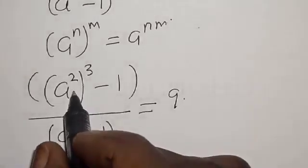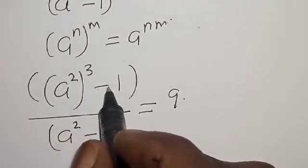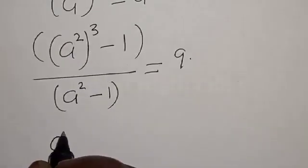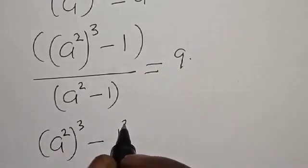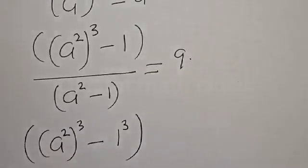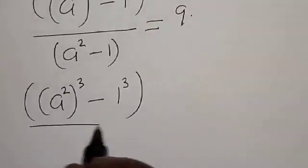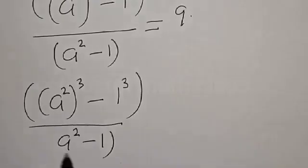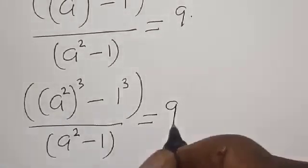Now, a squared raised to power 3 — this is the same thing as 1 raised to power 3. So we have a squared raised to power 3 minus 1 raised to power 3, divided by a squared minus 1, is equal to 9.